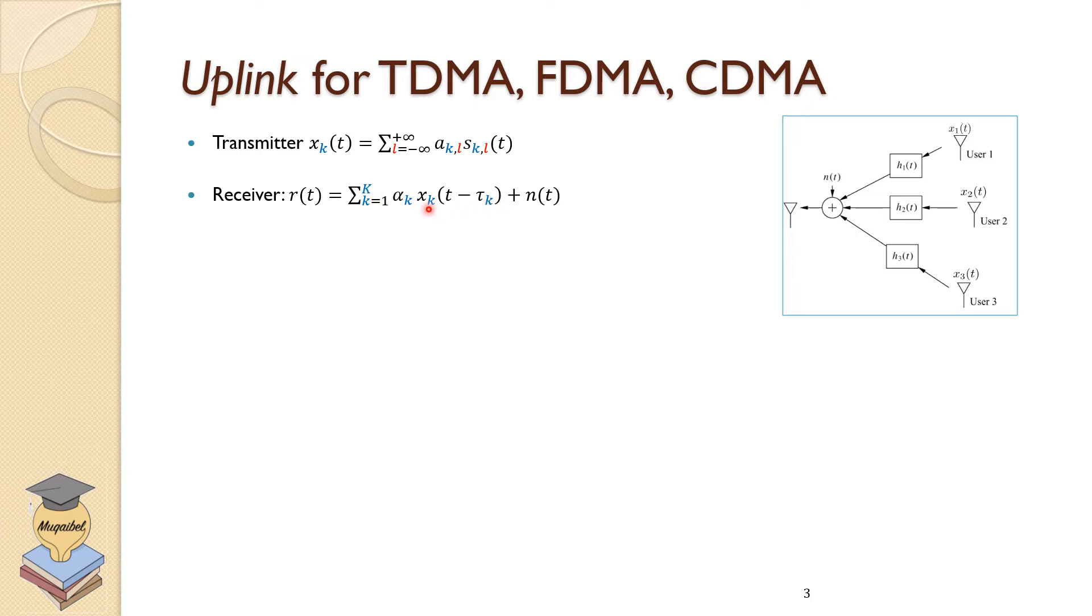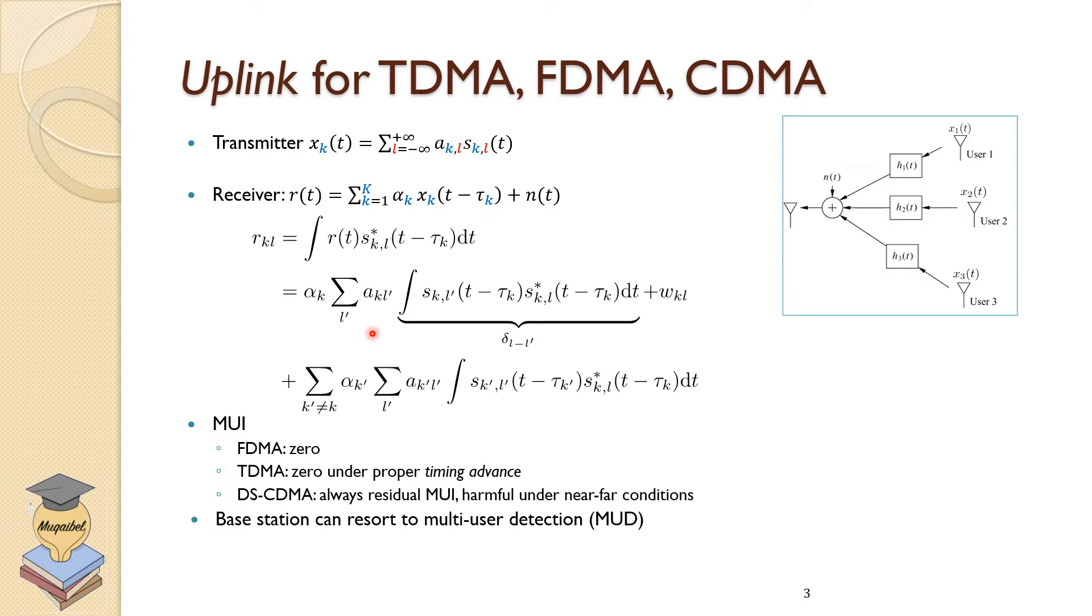We have different delay for different users. Once we receive at the base station, we will need to correlate. We correlate with the conjugate. Again, we'll have three separate terms: one is noise, one is the intended term, and one is the multi-user term.